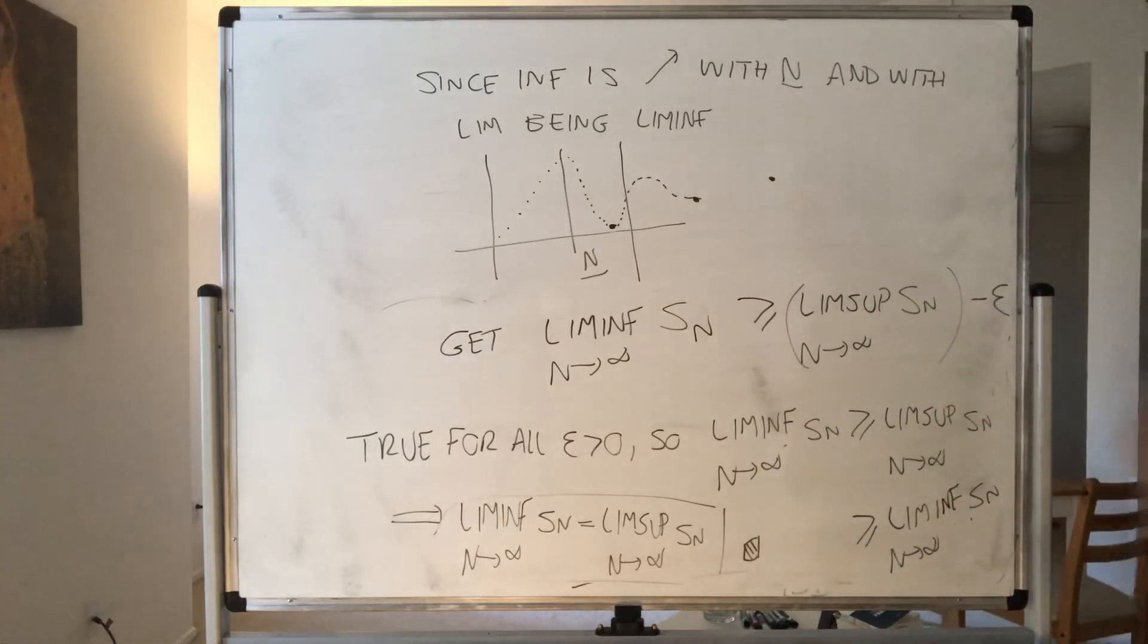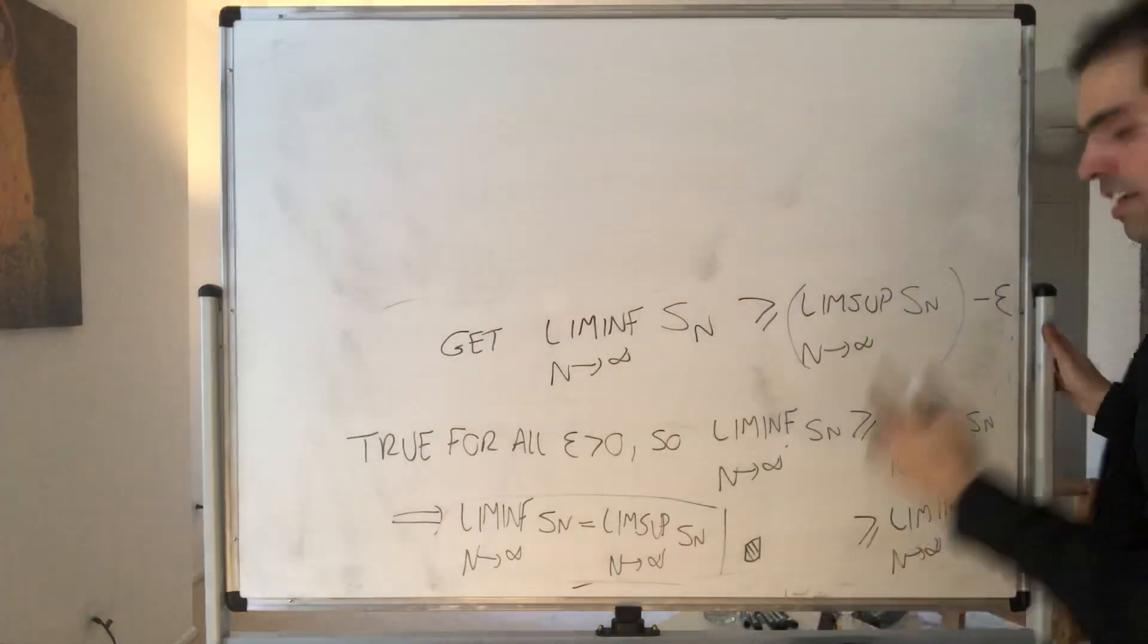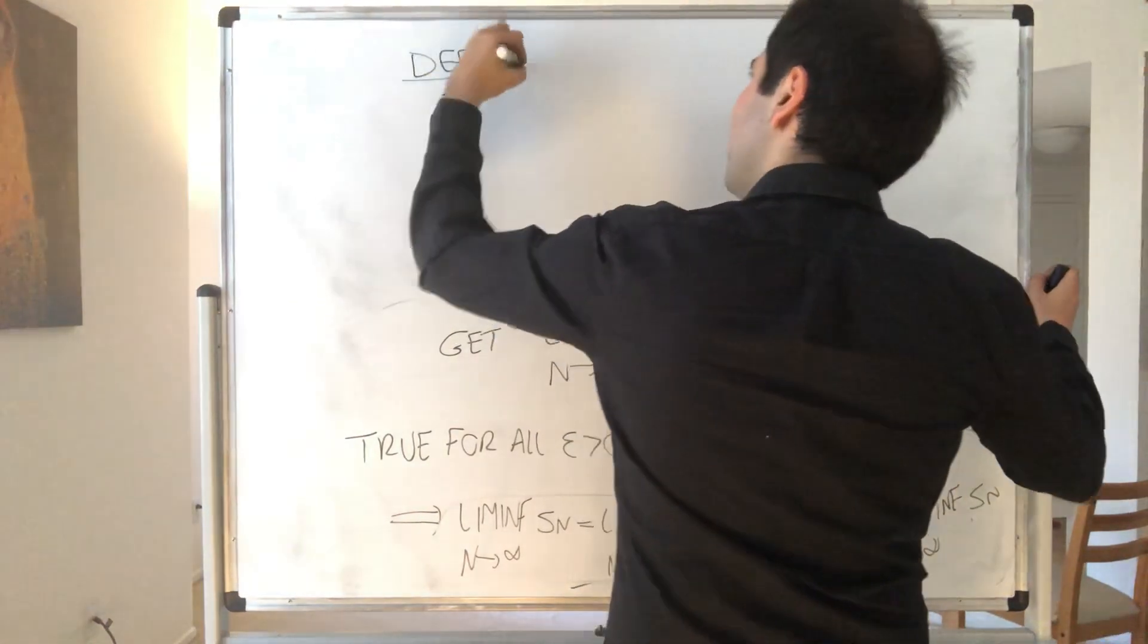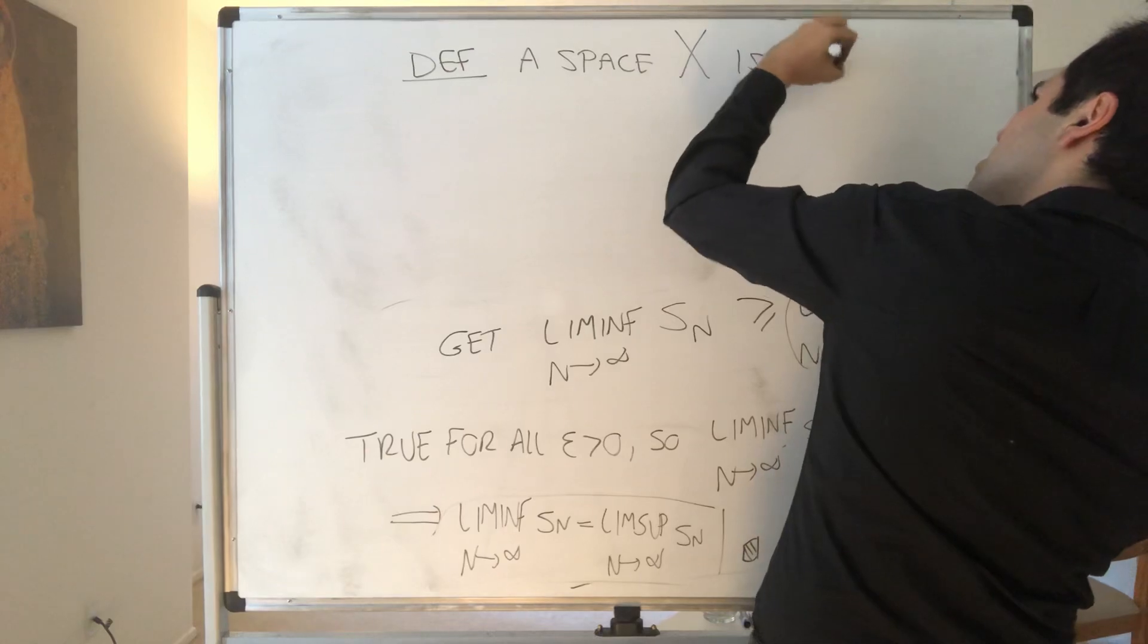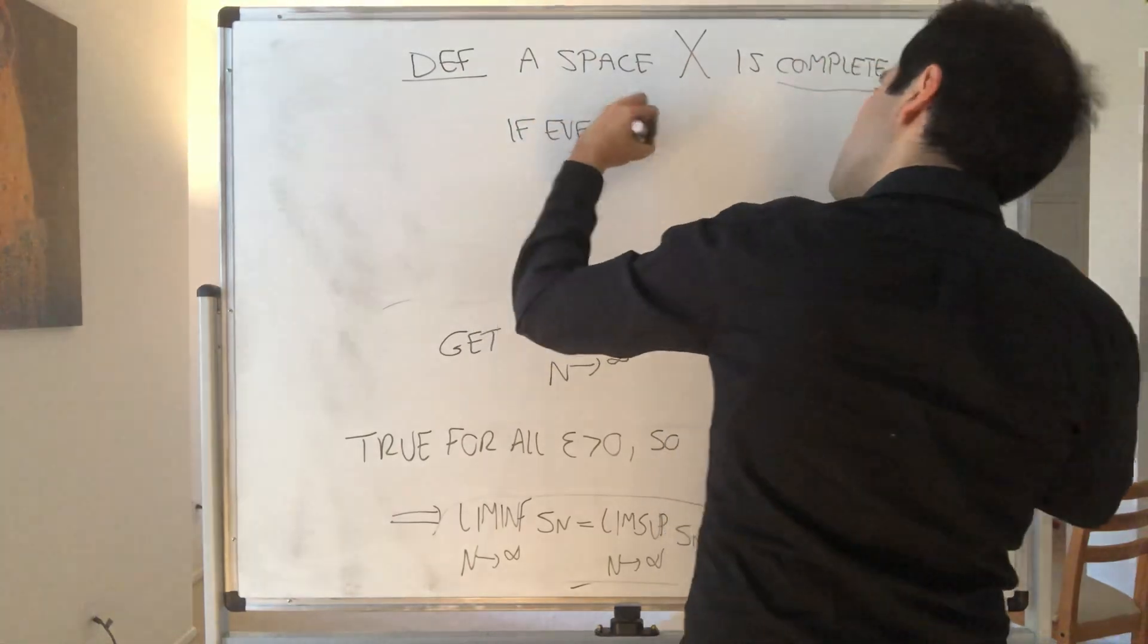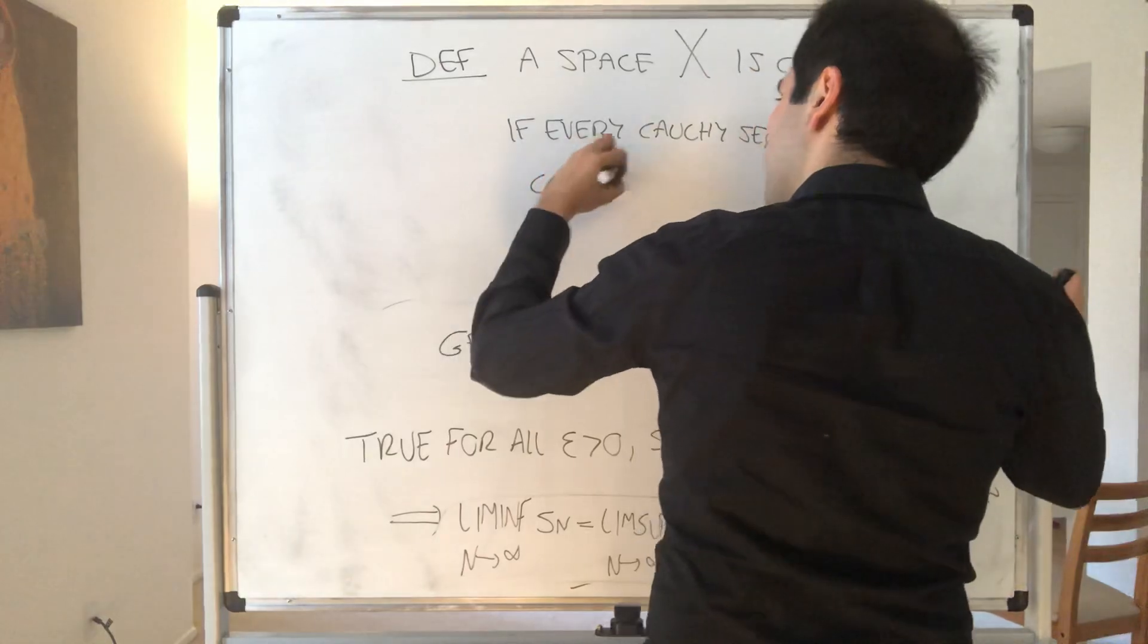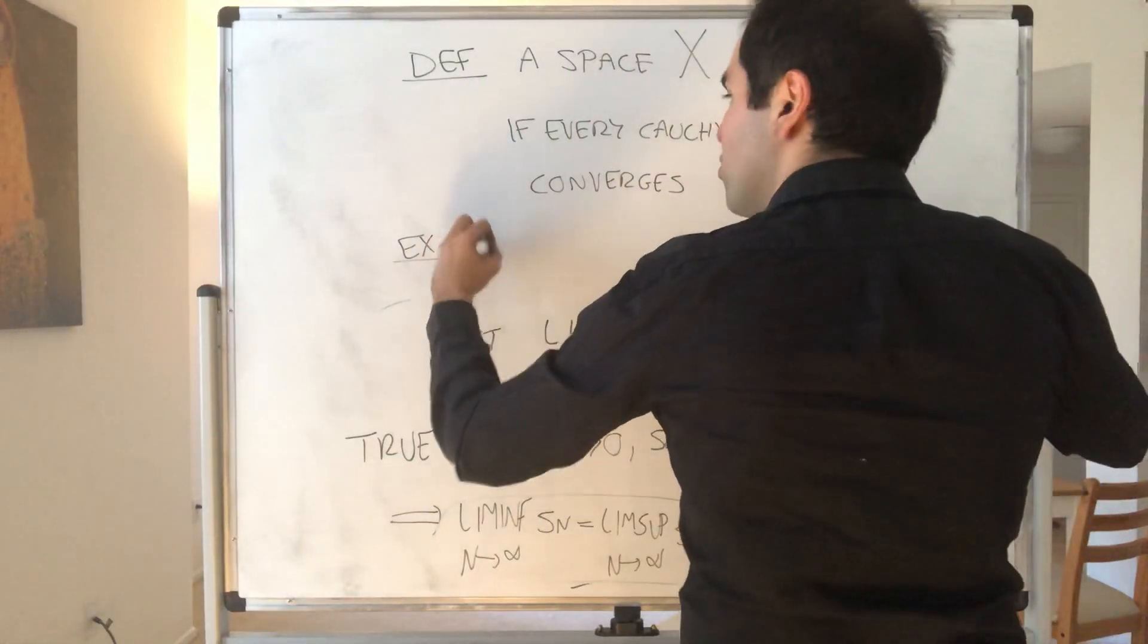And finally, I would like to conclude because this is a very important property that in the real numbers, Cauchy sequences converge. And in fact, this is a general definition. So a space, technically a metric space X, is complete if every Cauchy sequence in X converges.